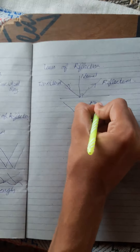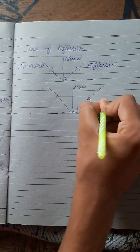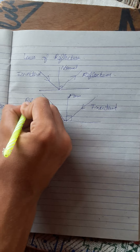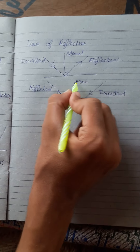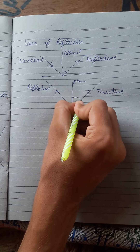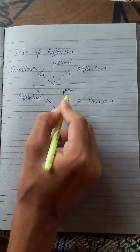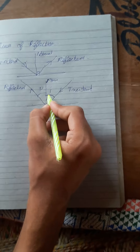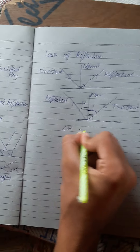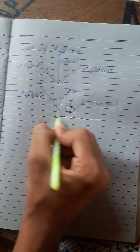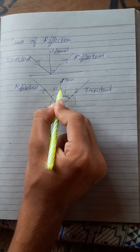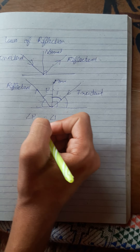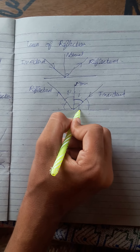The second law states that the angle formed by the normal and the incident ray, denoted i, and the angle formed by the normal and the reflected ray, denoted r, are always equal — angle r equals angle i. This is because this angle is 90 minus i and this is 90 minus r, so i and r are equal. When we sum this angle and that angle we get 90 degrees because the normal is perpendicular to the surface.